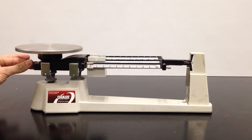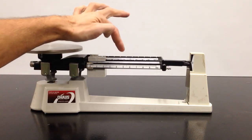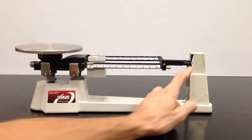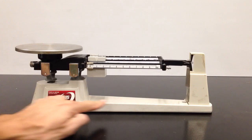Again: tray, adjustment knob, riders, one two three beams, pointer, the zero or scale, and then here's the base.